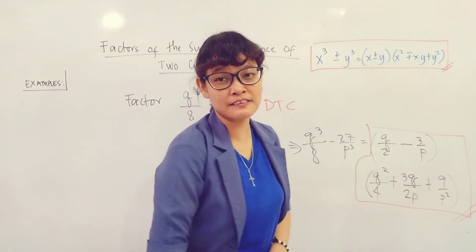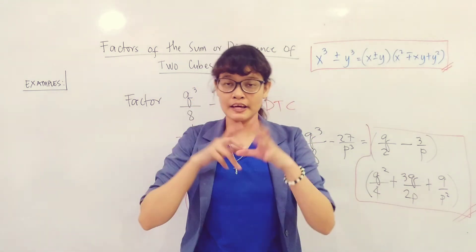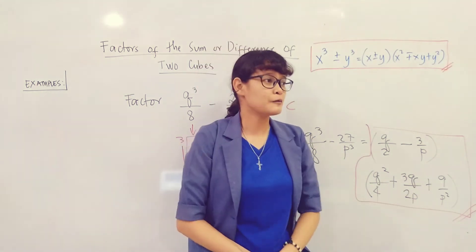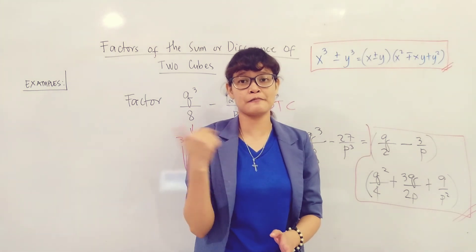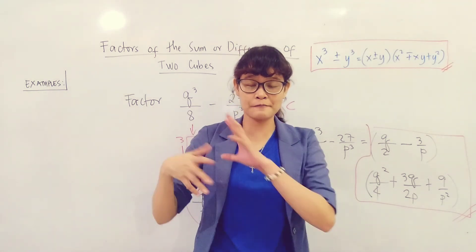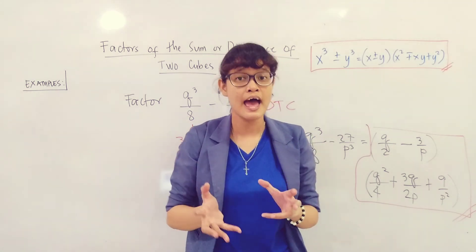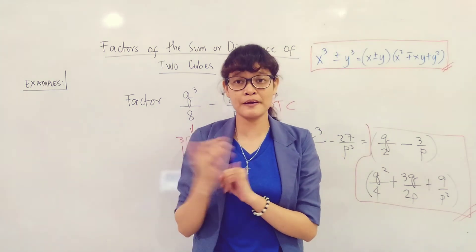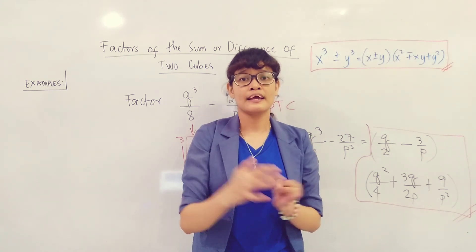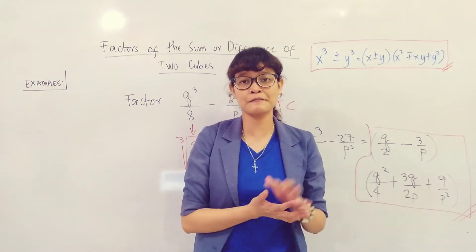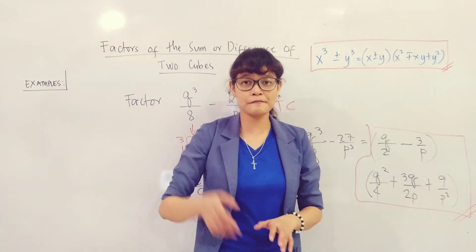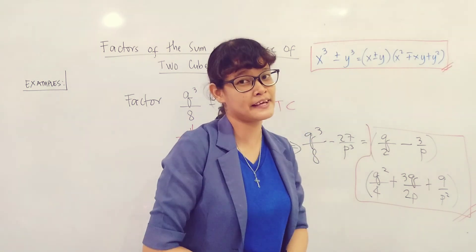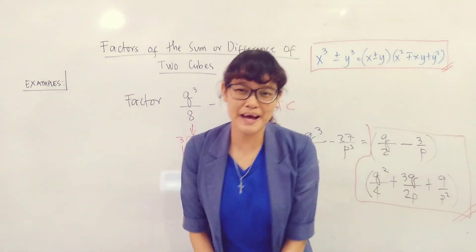That's it, mga masters. Hopefully this video helped you better understand how to factor the sum or difference of two cubes. To recap: first, get the cube roots of each cube; second, the sign of the given DTC or STC becomes the sign of the binomial factor; and for the trinomial factor, square the first term, use the opposite sign, get the product of the two cube roots, then square the last term. Thank you so much for watching, see you on my next video.